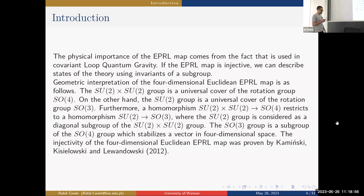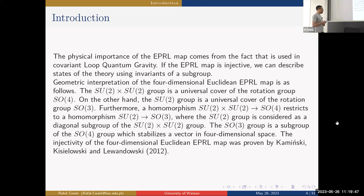The physical importance of the EPRL map comes from its use in covariant quantum gravity. If the EPRL map is injective, we can describe states of the theory using invariants of a subgroup instead of invariants of the full group. The injectivity of the four-dimensional Euclidean EPRL map was proven by Kamiński, Kisielowski, and Lewandowski in 2012. Geometrically, SU(2)×SU(2) is the universal cover of SO(4), and SU(2) is the universal cover of SO(3), with SU(2) as the diagonal subgroup stabilizing a vector in four-dimensional space.